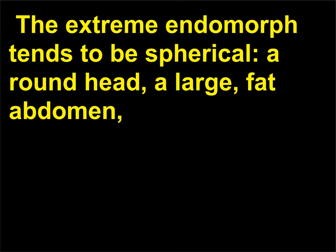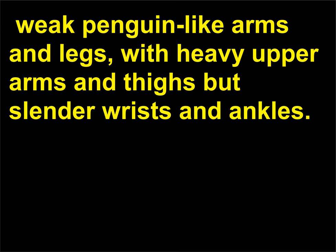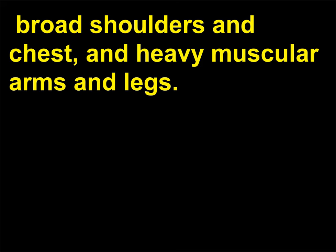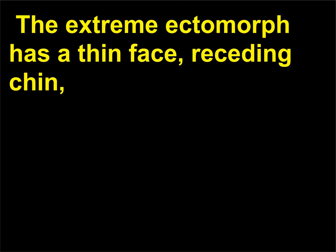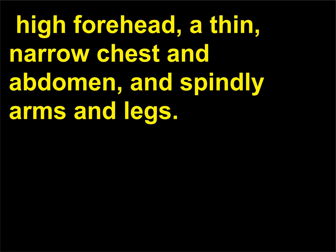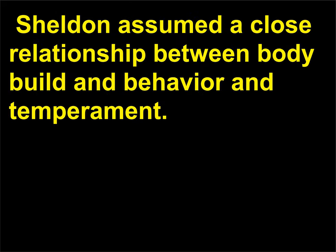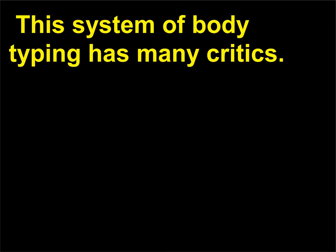The extreme endomorph tends to be spherical, with a round head, a large fat abdomen, weak penguin-like arms and legs with heavy upper arms and thighs but slender wrists and ankles. The extreme mesomorph is characterized by a massive cubical head, broad shoulders and chest, and heavy muscular arms and legs. The extreme ectomorph has a thin face, receding chin, high forehead, a thin narrow chest and abdomen, and spindly arms and legs. In Sheldon's system there are also mixed body types determined by component ratings, and Sheldon assumed a close relationship between body build and behavior and temperament. This system of body typing has many critics.